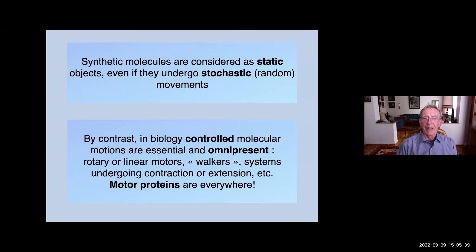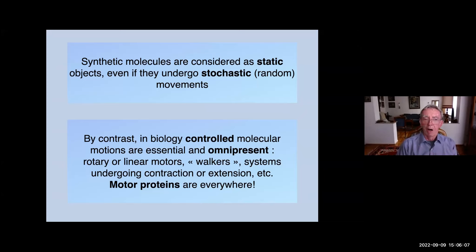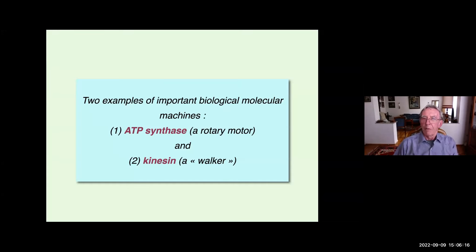Now let's look at molecular systems found in biology — it is exactly the opposite. In biology, controlled molecular motion is absolutely essential and you will find it everywhere: rotary motors, linear motors, and even walkers, systems which can contract or elongate. These systems, mostly belonging to the very wide family of motor proteins, are extremely important and universal. It is important to know what is going on in biology, so I would like to discuss two particularly important examples: ATP synthase, which is a rotary motor, and kinesin, which is a walker.